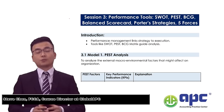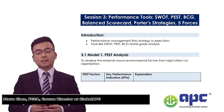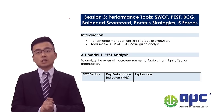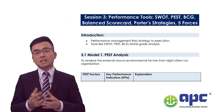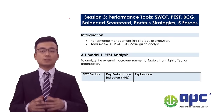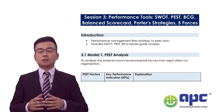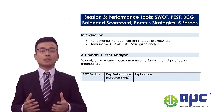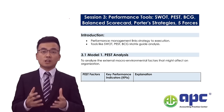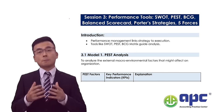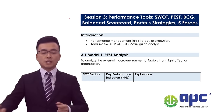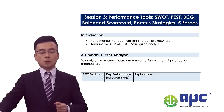Welcome to Section 3. We're going to be using some of the performance tools. We're going to be recapping on what we've studied in the strategic chapter and paper — for example, the SWOT analysis, PEST analysis, BCG matrix, Porter's generic strategies, and Porter's five forces models. Now let's recap on those one by one.